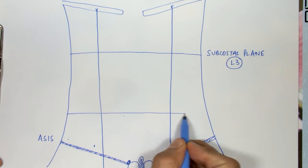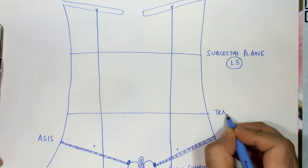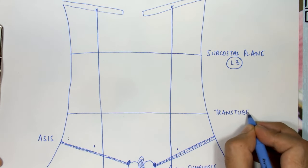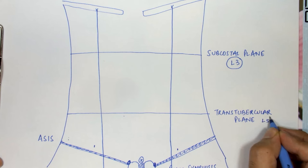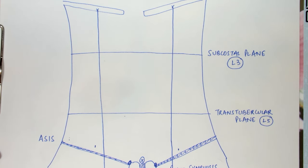The second plane we use is the transtubercular plane. This plane passes through the two tubercles on the iliac crest anteriorly, and posteriorly it corresponds to the fifth lumbar vertebra.